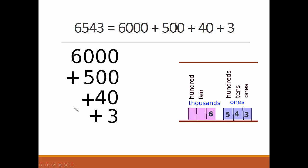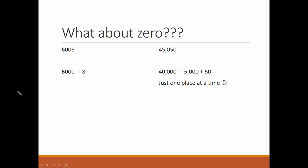We're not changing the number. We're just talking about it in a different way. What about zero? Well, if there aren't any hundreds or tens, we don't have to talk about them. This number would be written as 6,000 plus 8.